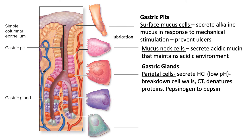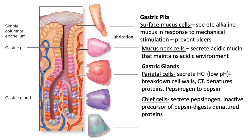Moving into the gastric glands, we'll begin with the parietal cells. Importantly, these secrete hydrochloric acid, which is responsible for the low pH environment in the stomach — around 1.5 to 2.5. Hydrochloric acid helps break down cell walls of plants, breaks down connective tissue and animal tissue, helps denature proteins, and converts pepsinogen to pepsin — which is what further breaks down protein. The next cells within the gastric glands are the chief cells, the most numerous, which is why they're named chief cells. Chief cells secrete pepsinogen — the precursor to pepsin.